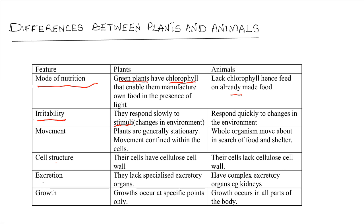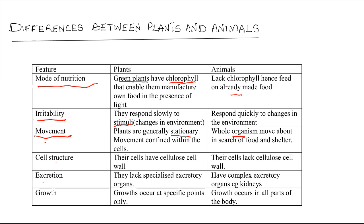Another way to differentiate is in movement. Plants are generally stationary — that is, they don't move about — while animals move about mainly in search of food, shelter, and even a mate.